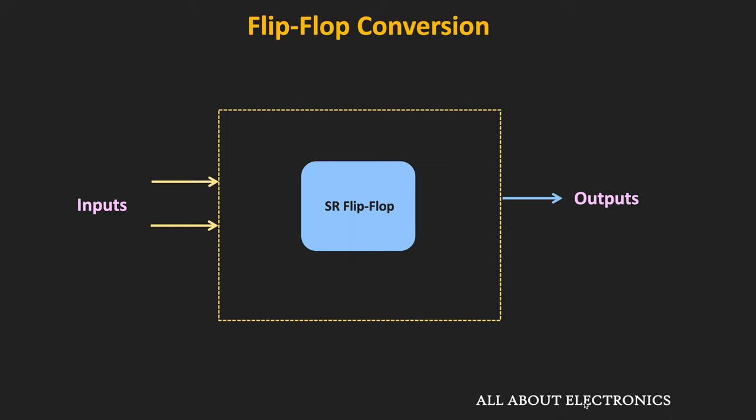Let's say you have designed some circuit with the help of the SR flip-flop. Now during the implementation, you found that you do not have the SR flip-flop and instead you only have the JK flip-flop. So if you have knowledge about the SR to JK flip-flop conversion, then there is no need to design the entire circuit once again. Just using a few logic gates, the same flip-flop can be converted into another flip-flop. So let us understand the basic idea about the flip-flop conversion.